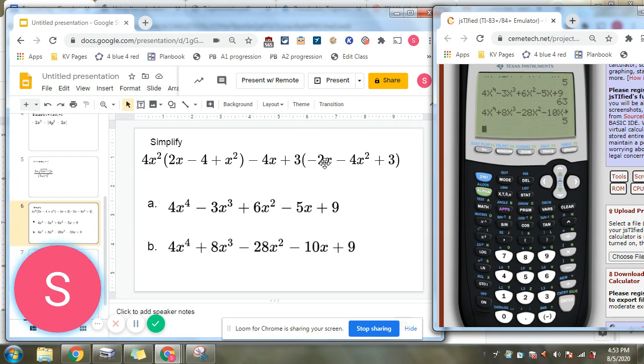So because the original and option b both gave us a 5 when we plugged in 2, it's a really good chance that b is the answer.